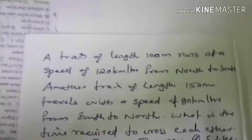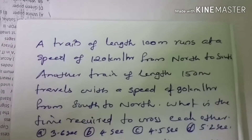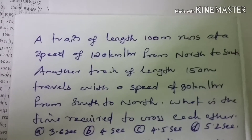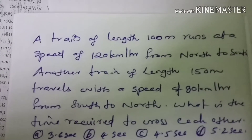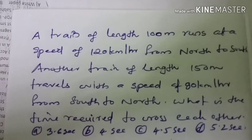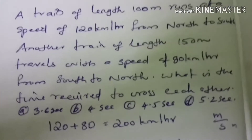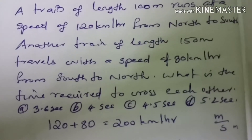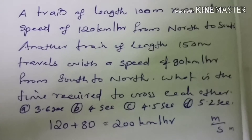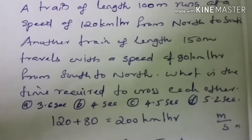A train of length runs at a speed of 120 km per hour from north to south. Another train of 150 meters travels at a speed of 80 km per hour from south to north. What is the time required for them to cross each other?